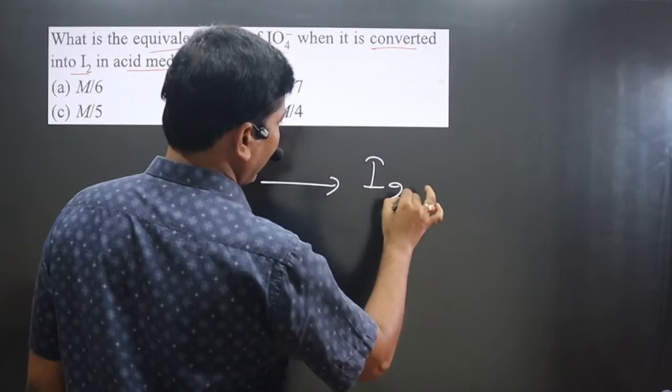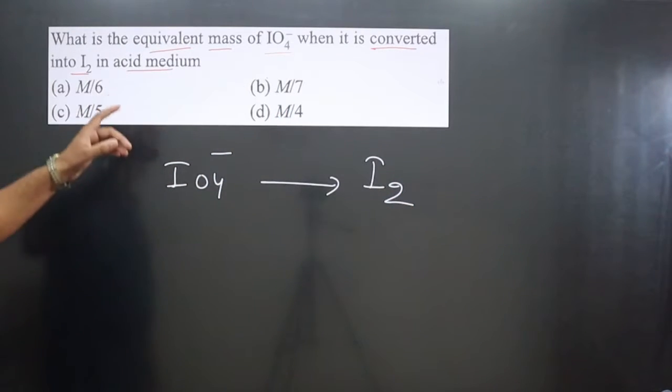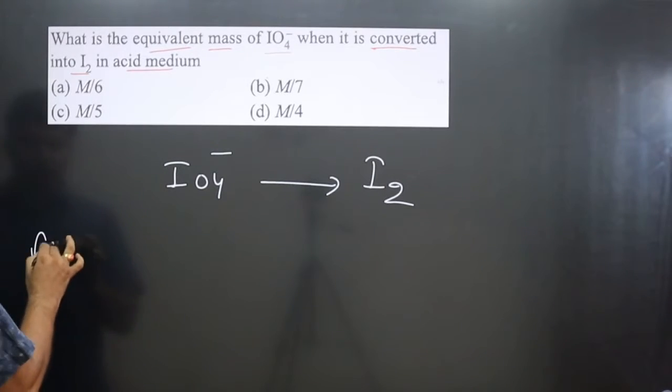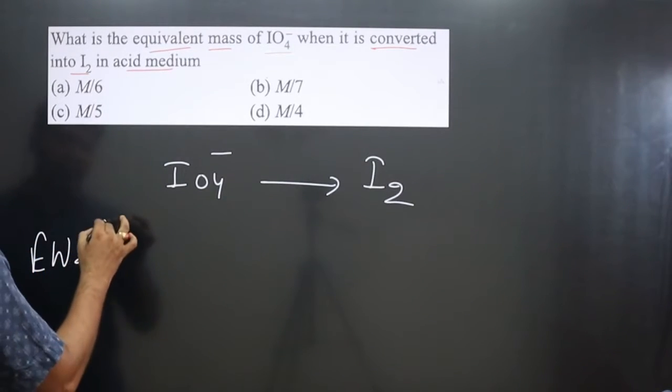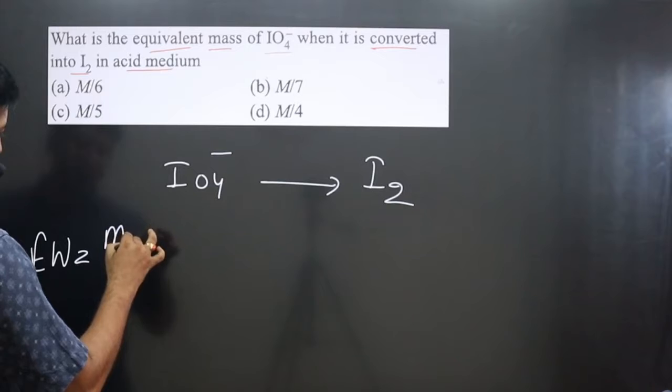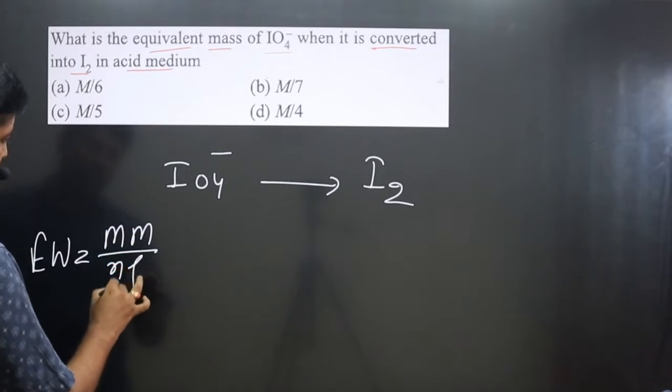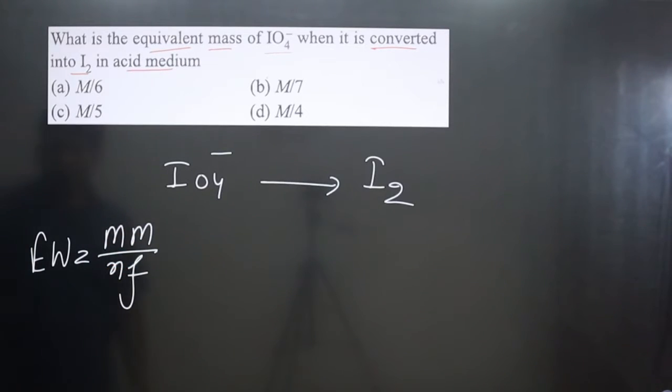into I₂ in acidic medium. We need to calculate the equivalent mass of IO₄⁻. The formula for equivalent mass is: equivalent mass equals molecular mass divided by n-factor.